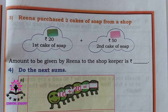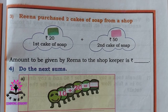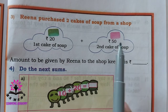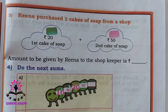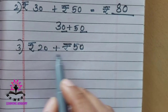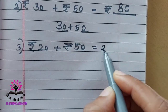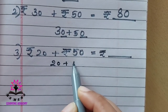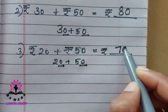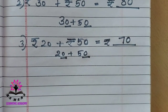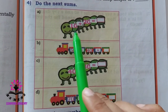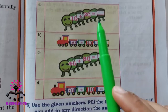Arena purchased 2 cakes of soap: green color soap for rupees 20 and pink for rupees 50. Find the total amount — 20 plus 50. Both have 0 in the unit place, so add the tens digits: 2 plus 5 is 7, add 0 in the unit place. The answer is rupees 70.